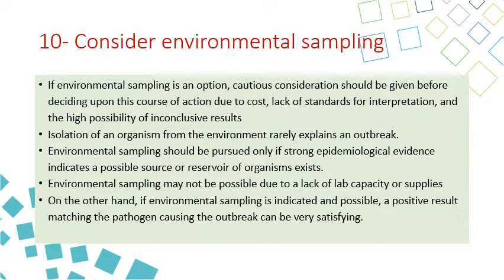Step ten is to consider environmental sampling. Cautious consideration should be given before deciding on this course of action due to cost, lack of standard interpretations, and the high possibility of inconclusive results. Isolation of an organism from the environment rarely explains an outbreak; environmental sampling should only be pursued if strong epidemiological evidence indicates a possible source or reservoir. Environmental sampling may not be possible due to lack of lab capacity or supplies. However, if indicated, a positive result matching the pathogen causing the outbreak can be very valuable.